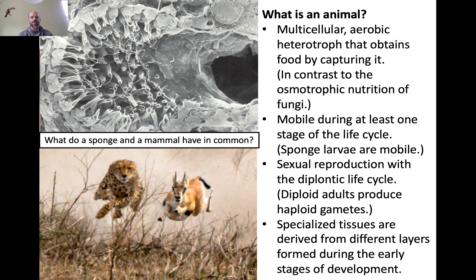We are mostly mentioning sponges right now as our introduction to the animals and to talk about what is an animal — what is the set of characteristics that all animals, from sponges to mammals and everything in between, have in common. An animal is multicellular — even a sponge is multicellular, as we saw in comparison to the choanoflagellates. Animals are aerobic; all animals use oxygen, and the rise in oxygen levels was probably a requirement for animals to have evolved in the first place. A special characteristic of animals is that they obtain their food by capturing it — a cheetah captures prey in familiar ways, while a sponge captures food particles from water flowing through its body.